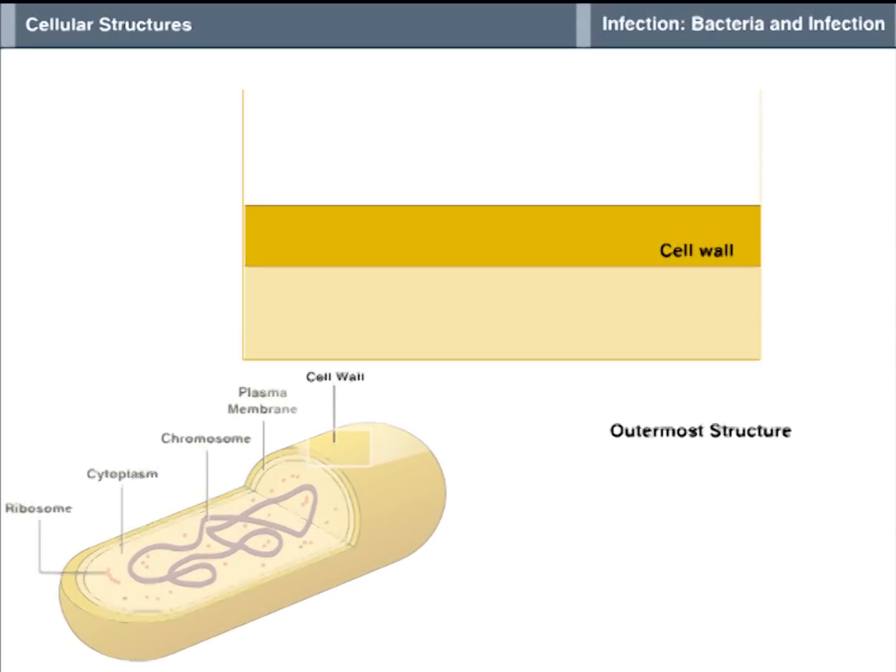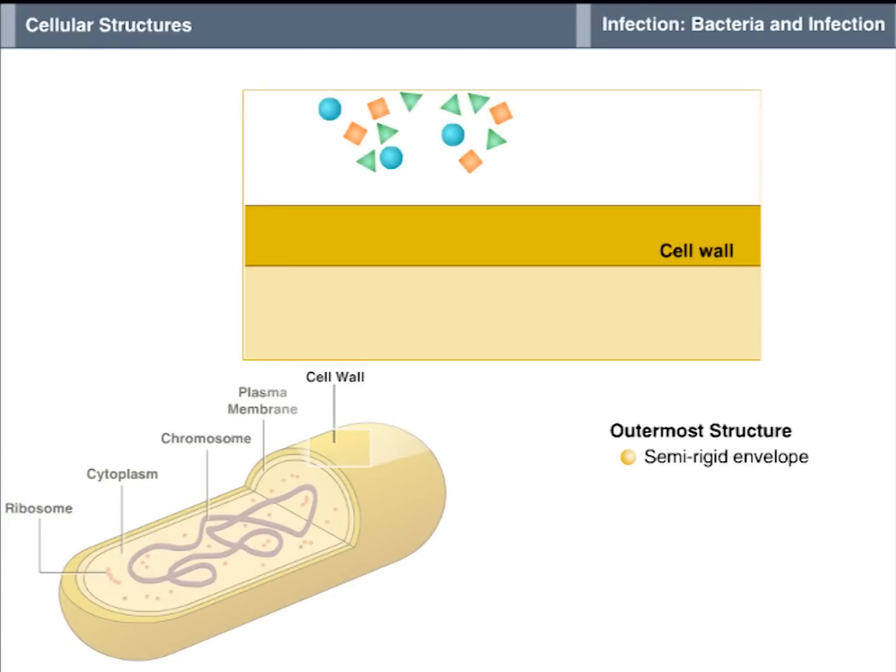The outermost structure of bacteria is the cell wall, a semi-rigid envelope that maintains the integrity of the cell in the same way that the skin maintains the integrity of the human body. The cell wall helps protect the cell against environmental changes, for example heat, cold, and drought, that would otherwise damage or destroy it.